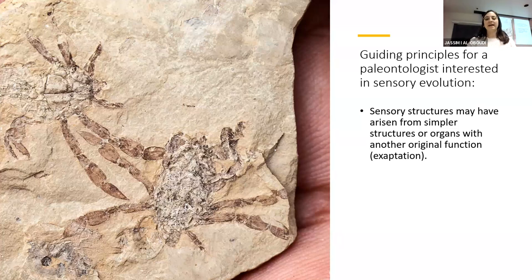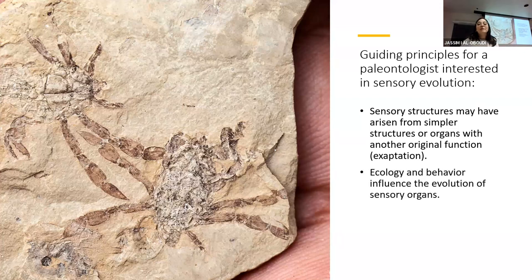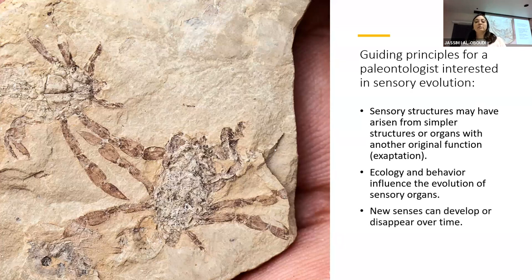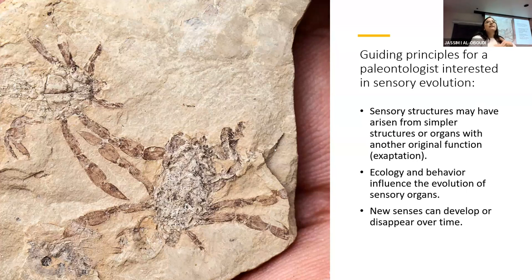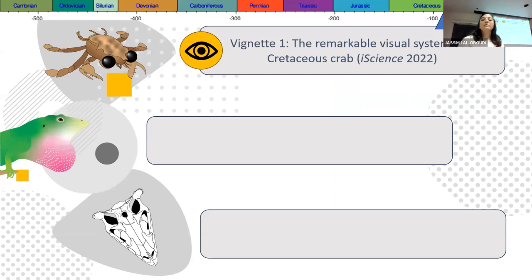I have a set of guiding principles for this paleontological macroevolutionary work. First, sensory structures may have arisen from organs that previously looked and functioned very differently — exaptation, where a structure takes on a function differing from its original one, is a common theme. Second, ecology and behavior have strong effects on sensory structures, so two species might have the same organ but it looks and functions very differently depending on how they use it. Finally, new senses can develop over time and they can disappear too, and looking at those patterns of loss and gain over macroevolutionary timescales can tell us about ancient environments and how lineages respond to climatic changes or major extinction events.